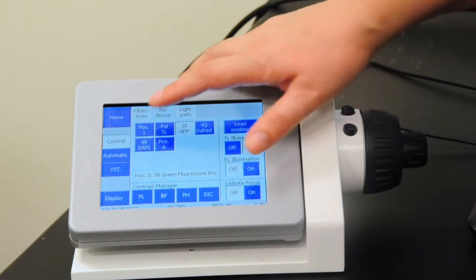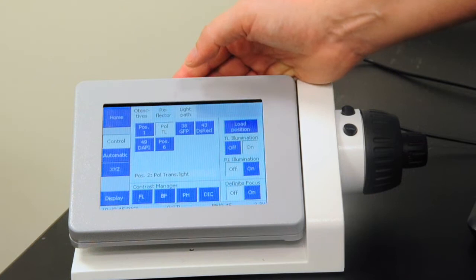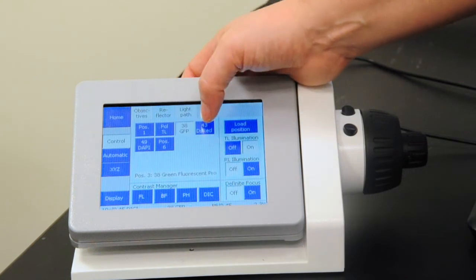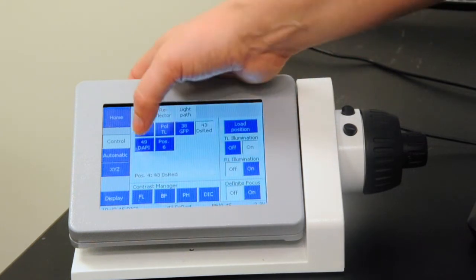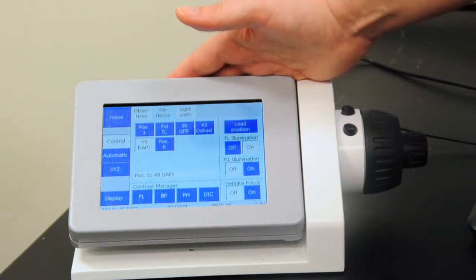Under this, we also have our reflectors. We have our polarizer for us to be able to look at our DIC. We have GFP, DSRED, and DAPI. Although we have the ability to image in far red, we do not have a far red cube because we're imaging through the PMT and humans cannot see in the far red channel.